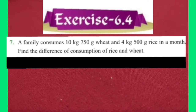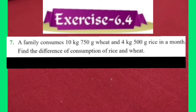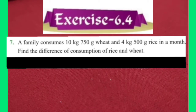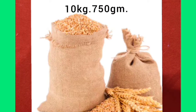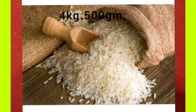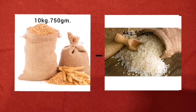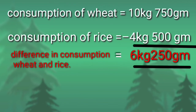Dear students, let's solve question number 7 of exercise 6.4. The question is: a family consumes 10 kilograms 750 grams of wheat and 4 kilograms 500 grams of rice in a month. Find the difference of consumption of rice and wheat. The family consumes 10 kilograms 750 grams of wheat and 4 kilograms 500 grams of rice in a month. To find the difference, we subtract the consumption of rice from consumption of wheat. The difference between the consumption of wheat and rice is 6 kilograms 250 grams.